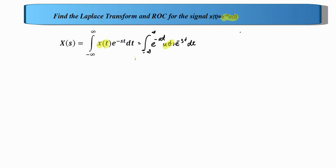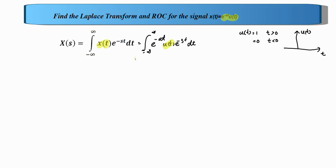We can write the definition for u of t: u of t is equal to 1 for t greater than 0, and 0 for t less than 0. If we plot this waveform on the time axis, u of t equals 1 for t greater than 0. This is a continuous time signal.